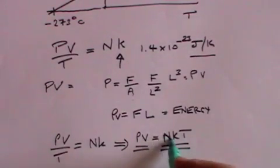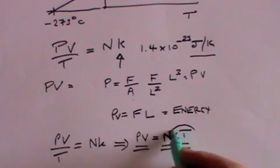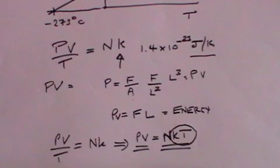What that really means is that since N is the total number of atoms, very roughly speaking, KT is the energy per atom.